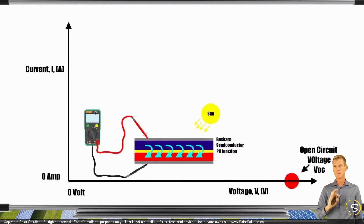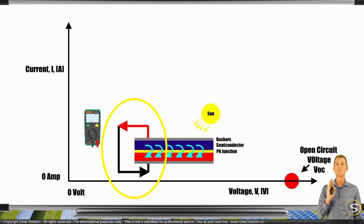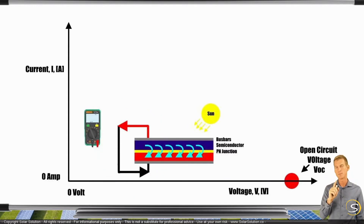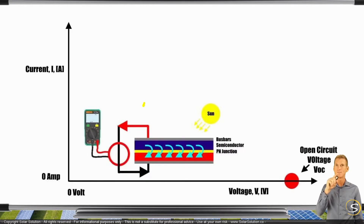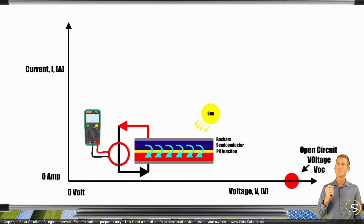For the second test, instead of measuring the voltage difference between the positive and the negative, we take a wire and connect the positive to the negative directly — creating a short circuit in the panel. We then take the multimeter and measure the amperage flowing through this short circuit. The electricity is running really fast through the panel because nothing is holding it back. We've created a short circuit, and for that reason the current is really high — this is the highest current we'll ever get from this cell under these conditions.